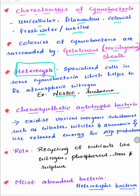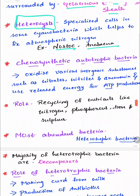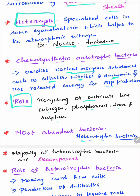Chemosynthetic autotrophic bacteria oxidize various inorganic substances such as nitrates, nitrites, and ammonia, and use the released energy for the production of ATP. They play a very important role in recycling of nutrients like nitrogen, phosphorus, iron, and sulfur.